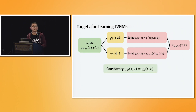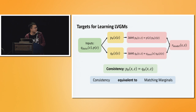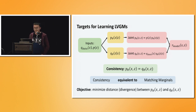We have two ways to define the same model, and so we want them to be consistent. The nice thing about consistency is that if it is consistent, then it automatically satisfies matching marginals. The first joint p(x, z) by definition has the correct marginal on z, and the joint q(x, z) by definition has the correct marginal on x. This means that if the two distributions are consistent, we have correct marginals on both x and z. So our objective can simply become minimizing some divergence or distance between the two joint distributions.